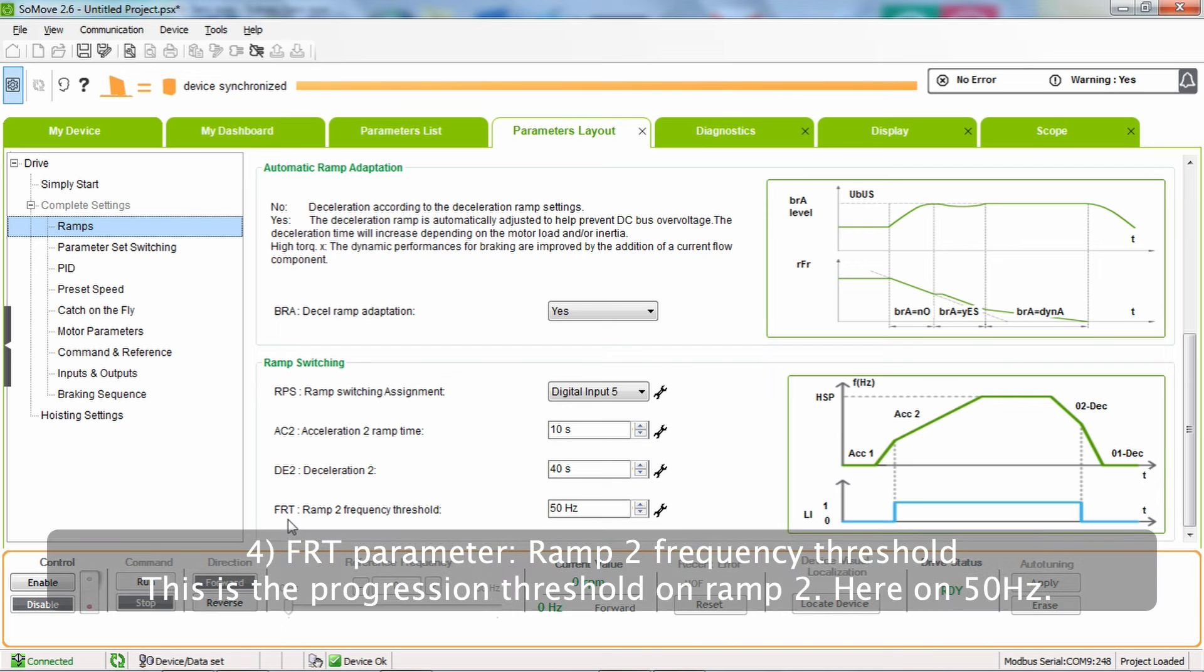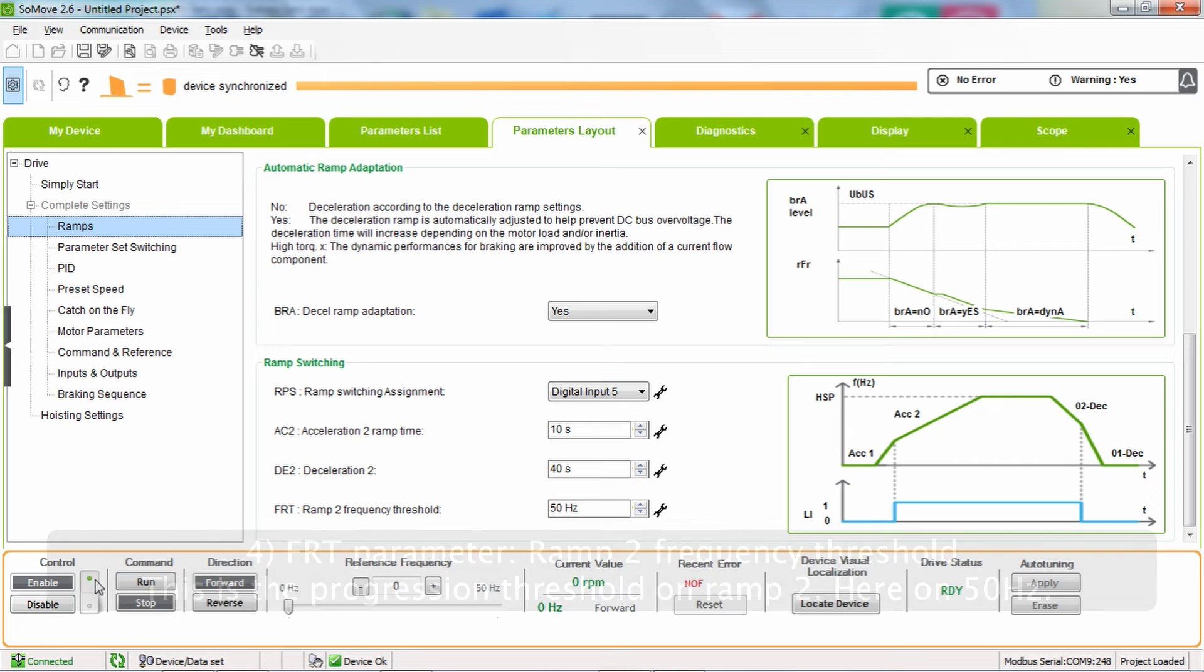Number 4: FRT parameter, ramp 2 frequency threshold. This is the progression threshold on ramp 2, here on 50 hertz.